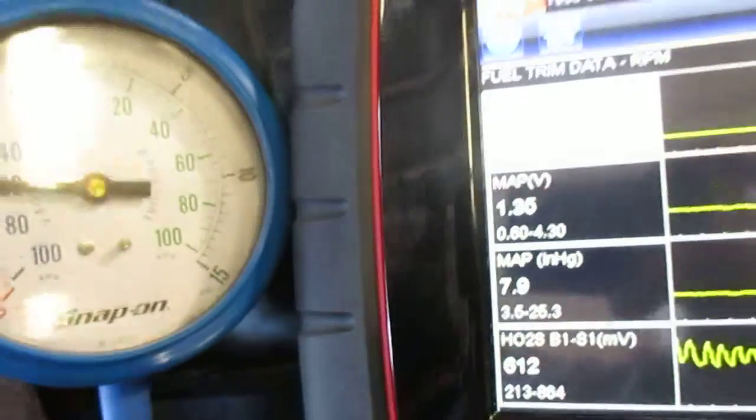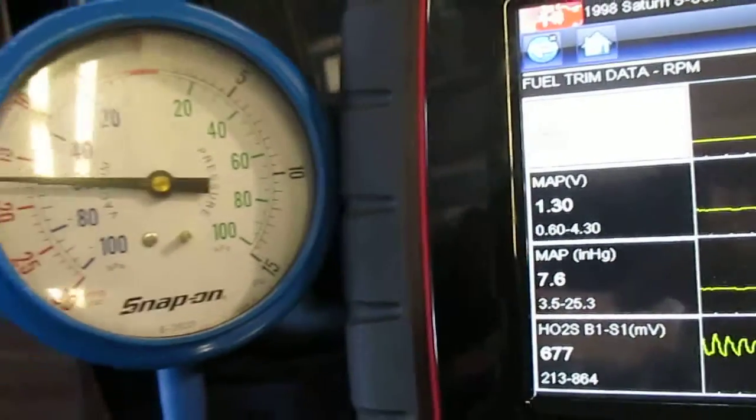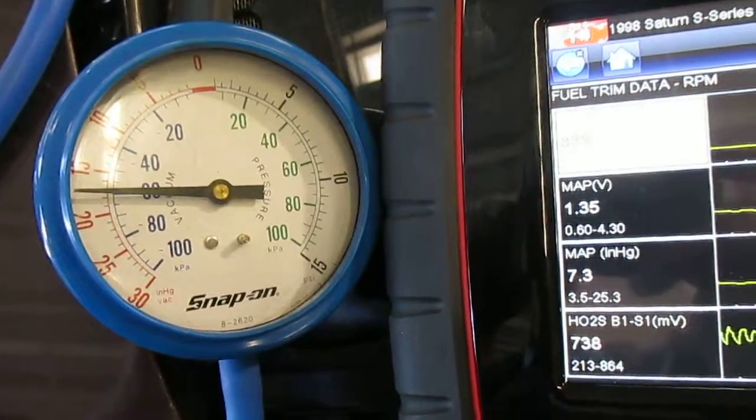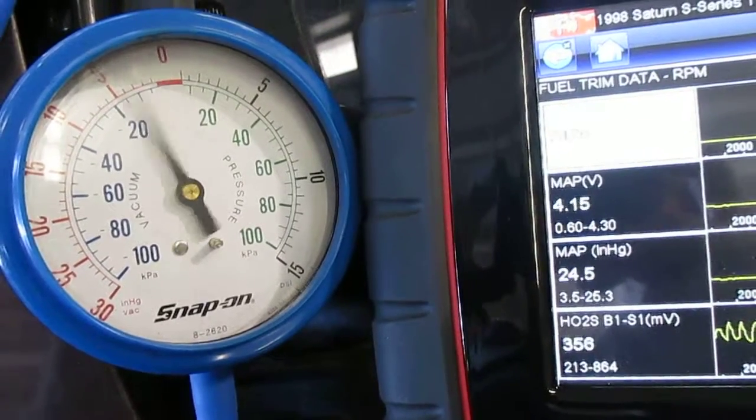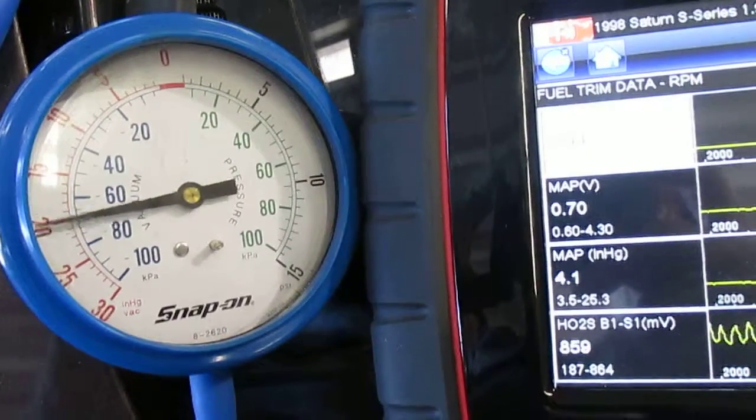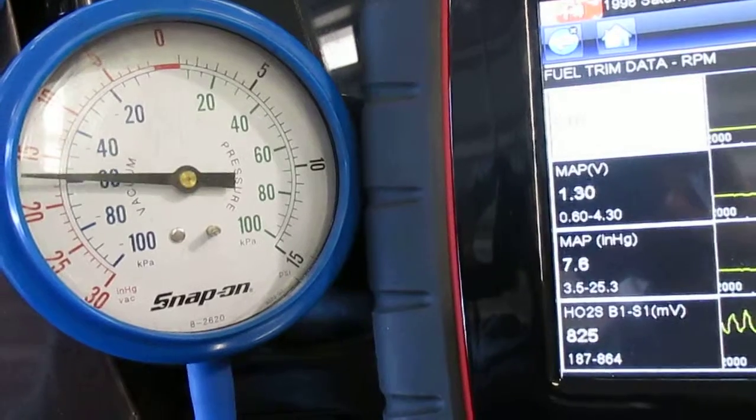Okay, so now watching MAP and watching vacuum, we see things change. As I floor it, watch what MAP does. It went close to absolute. One more time.